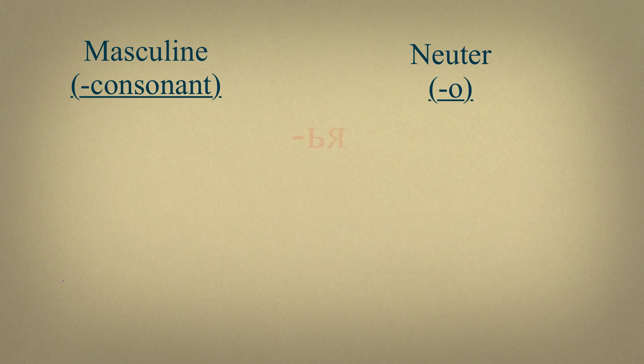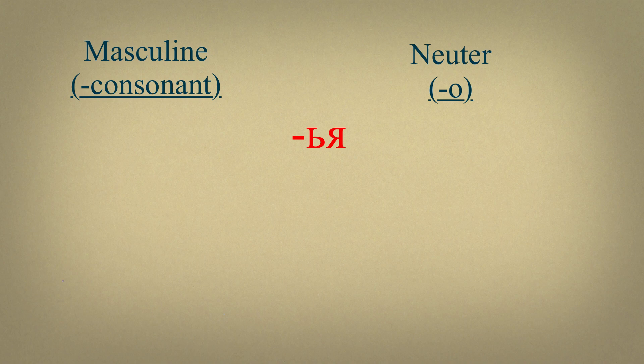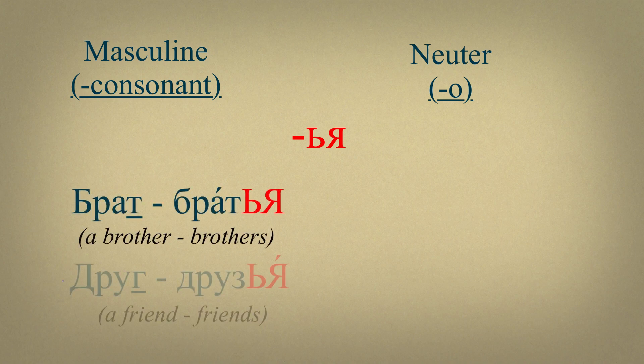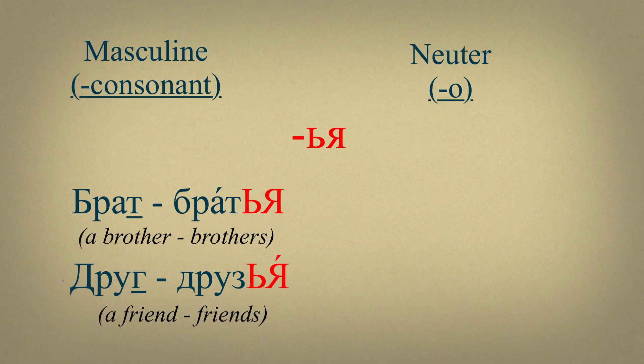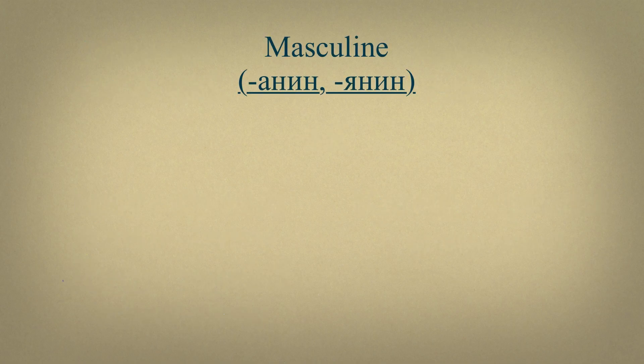Some nouns of masculine gender ending in consonant and nouns of neuter gender with an ending О have an ending мягкий знак Я in plural form. For example, брат, братья. Друг, друзья. Крыло, крылья.